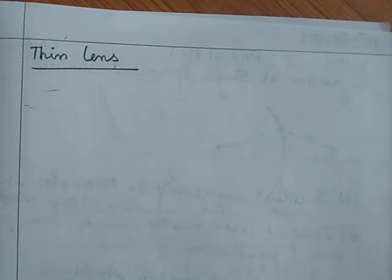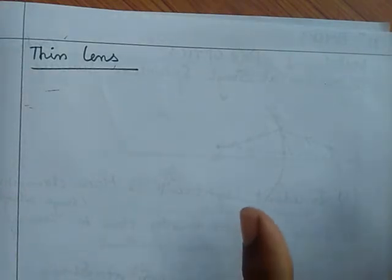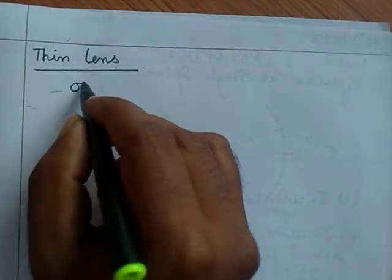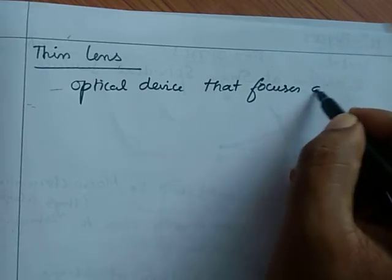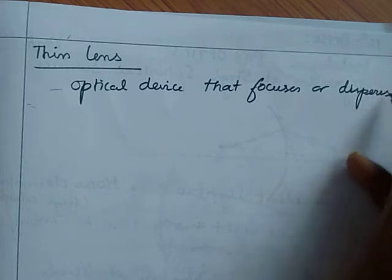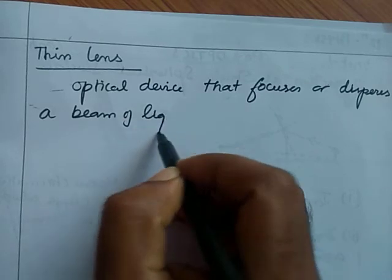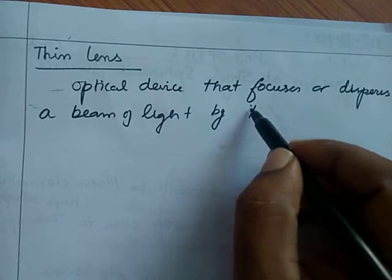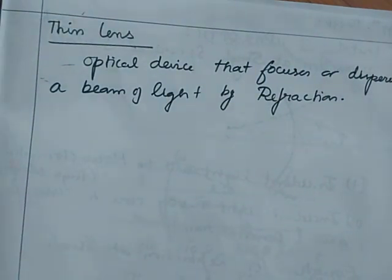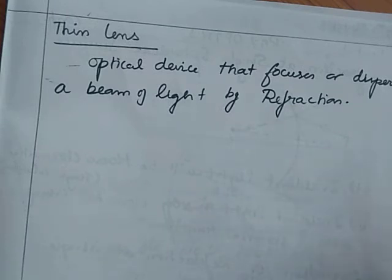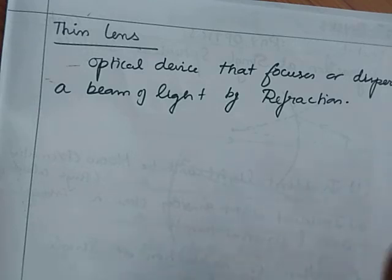By the knowledge of refraction at a single spherical surface, let me move to the next topic — thin lenses. A lens is an optical device that focuses or disperses a beam of light by the method of refraction. We know lenses are used for the correction of refractive errors — myopia, hypermetropia, presbyopia, astigmatism — the refractive errors for human beings.